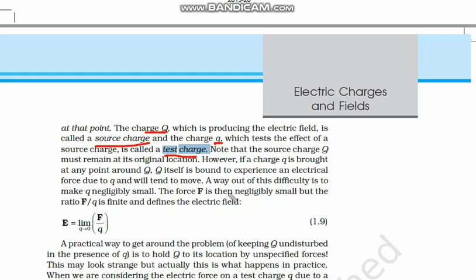However, if a test charge q is brought near Q, Q itself will experience a force due to q and will tend to move. This capital Q will also experience a force due to small q. A way out of this difficulty is to make q negligibly small. If we bring a small charge q closer, capital Q will be displaced from its position due to repulsive or attractive force. So we make q very, very small — negligibly small.